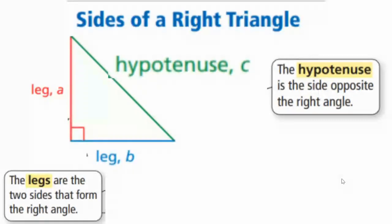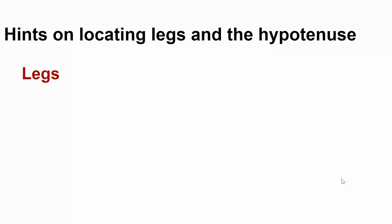So as you're looking at triangles, here are a couple hints for locating legs and the hypotenuse in a right triangle.